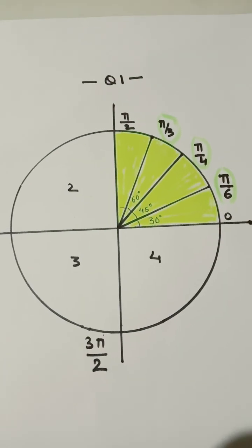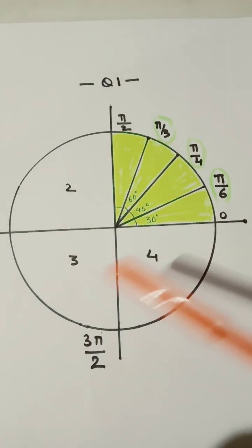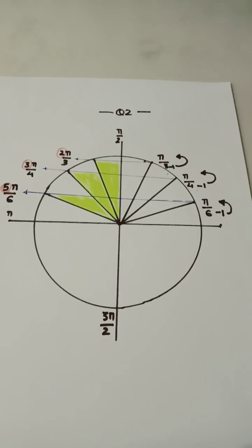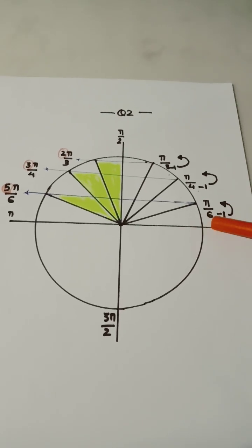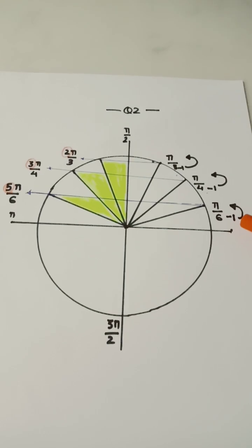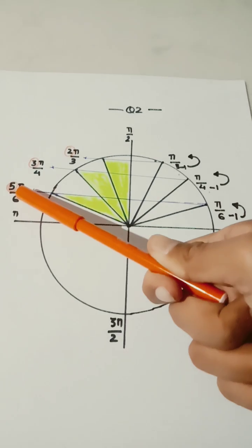This is the reference angle and it'll help us to find the other quadrants. To find the radians in quadrant 2, we will keep the bottom number the same and we will minus 1 from the bottom number to find the top number.